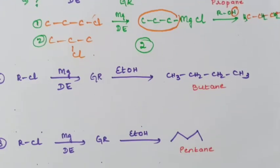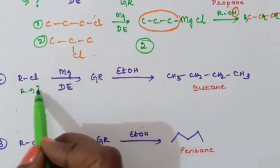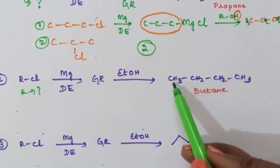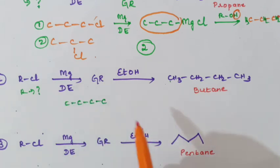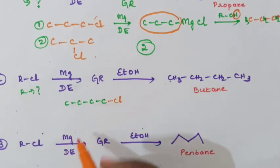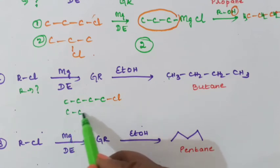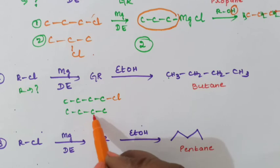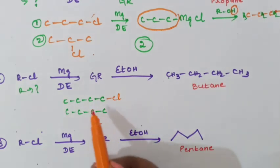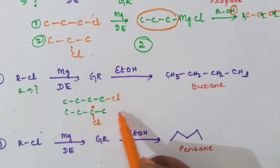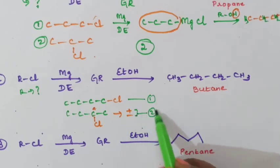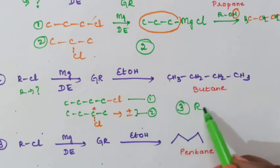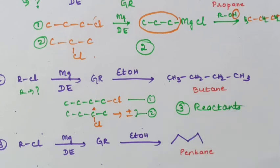For the second example, find the R group that gives butane as the product. Count 4 carbon atoms: 1, 2, 3, 4. Attach Cl to the last (terminal) carbon — that is 1-chlorobutane — this is one reactant. The second reactant is a 4-carbon chain with Cl on carbon 2; this carbon becomes a chiral carbon, so it can form both plus and minus (R and S) products — giving 2 reactants from this structure. So totally 1 + 2 = 3 alkyl halides can be taken to get butane.